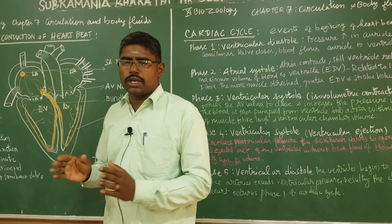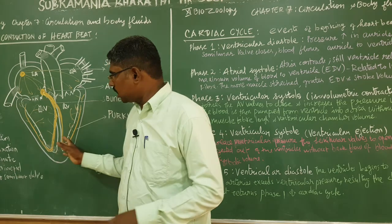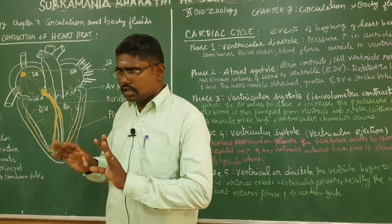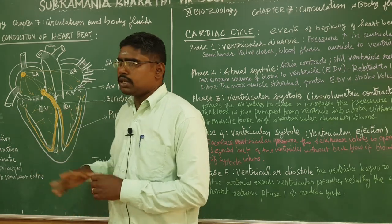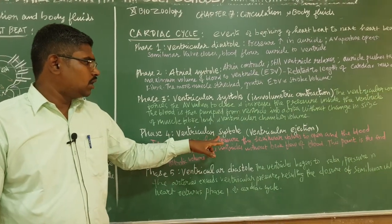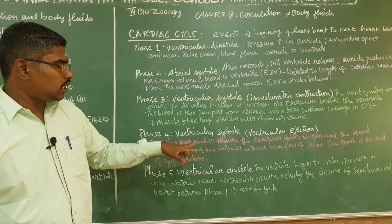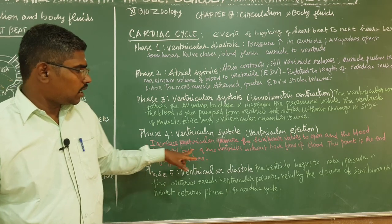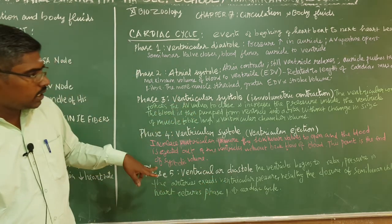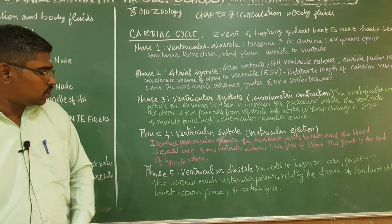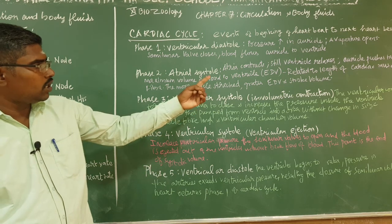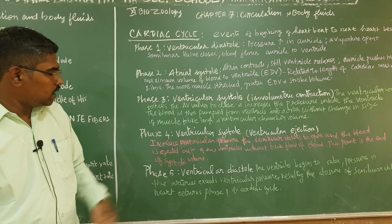Pressure increases in the ventricle, then blood is pumped from the ventricle to the aorta and pulmonary artery. Increased ventricular pressure causes the semilunar valves to open and blood is ejected out of the ventricles without backflow. This point is the end systolic volume, ESV.